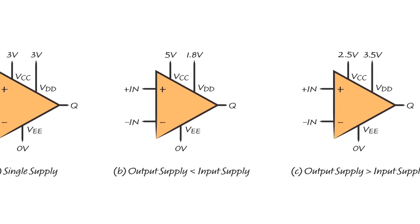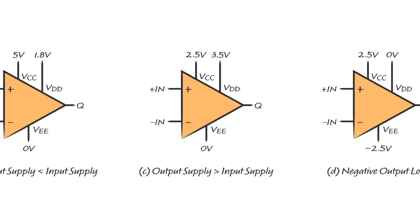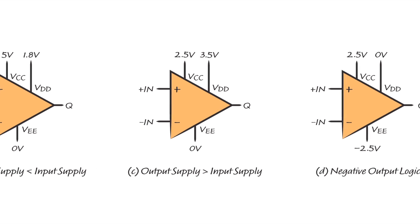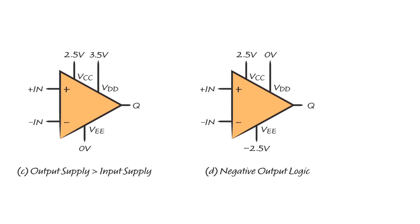Or an output logic level greater than the input signal range, as in the third figure. The fourth figure shows how bipolar input signal levels can be combined with negative output logic levels, where the input signals can go from minus 2.5V to plus 2.5V, with the output logic swinging from minus 2.5V to 0V.